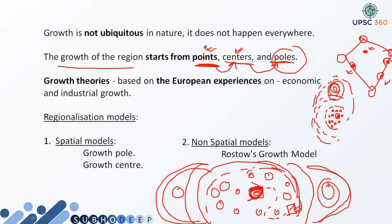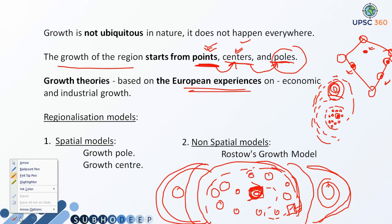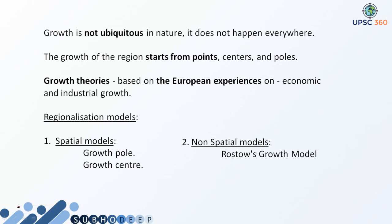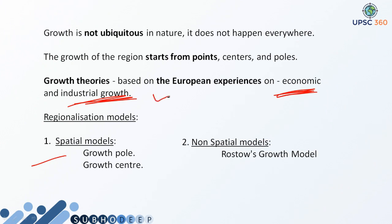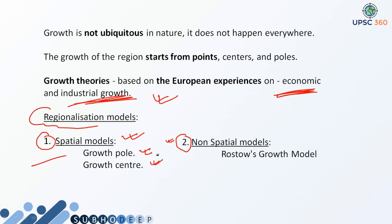Whether it is growth pole, growth center, or growth point — all these theories are of European experience, because Europeans were the ones where the first evolution of economic activities was observed. From there, industrialization got evolved in other parts of the world. They were the first to observe how the economy and industries were growing, and that is why they kept their model, which was called the regionalization model. Regionalization models are of two kinds: spatial and non-spatial. In the spatial kind, there are growth pole theories and growth center theories. In the non-spatial part, there is Rostow's growth model, which we will read in later classes.